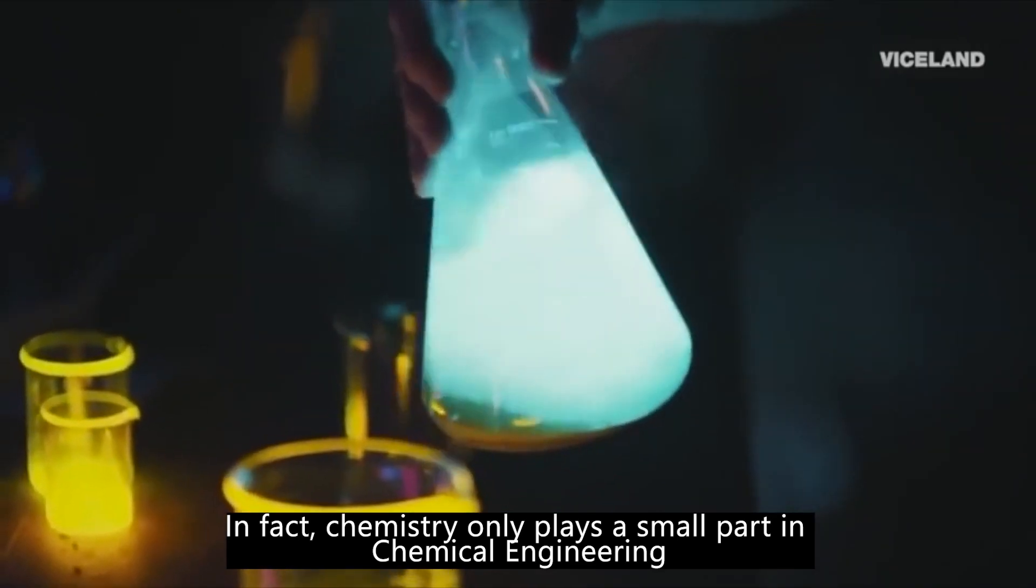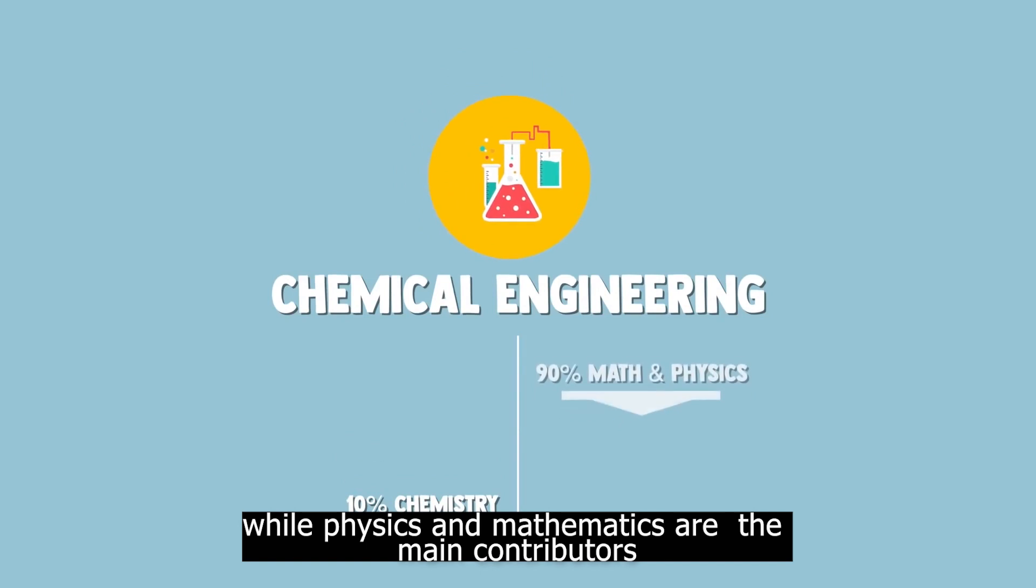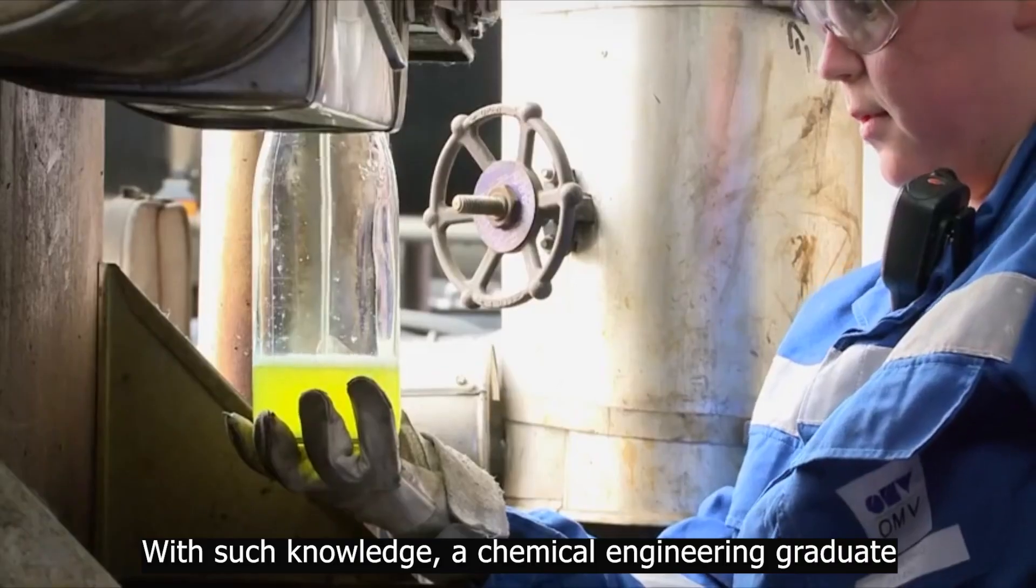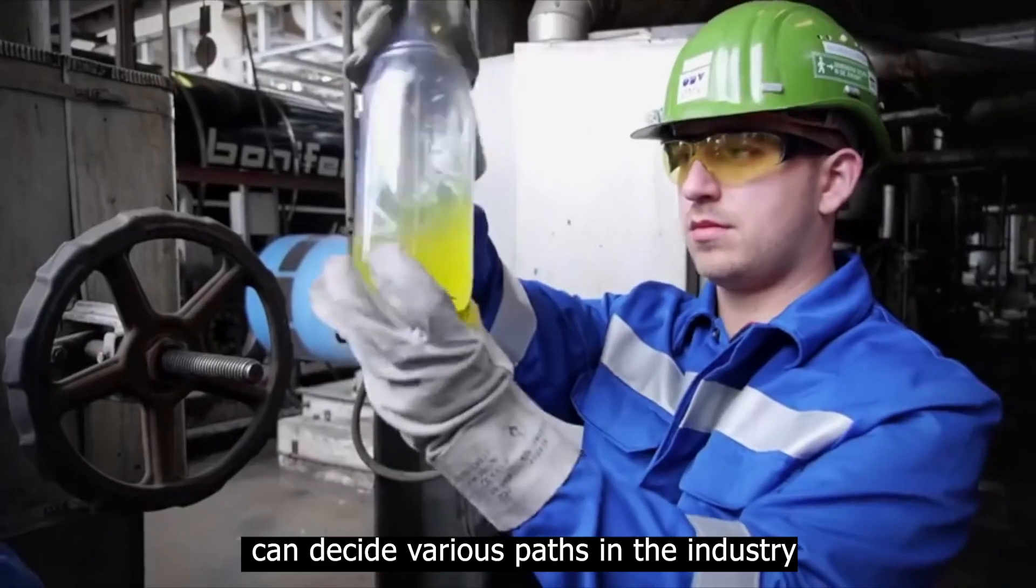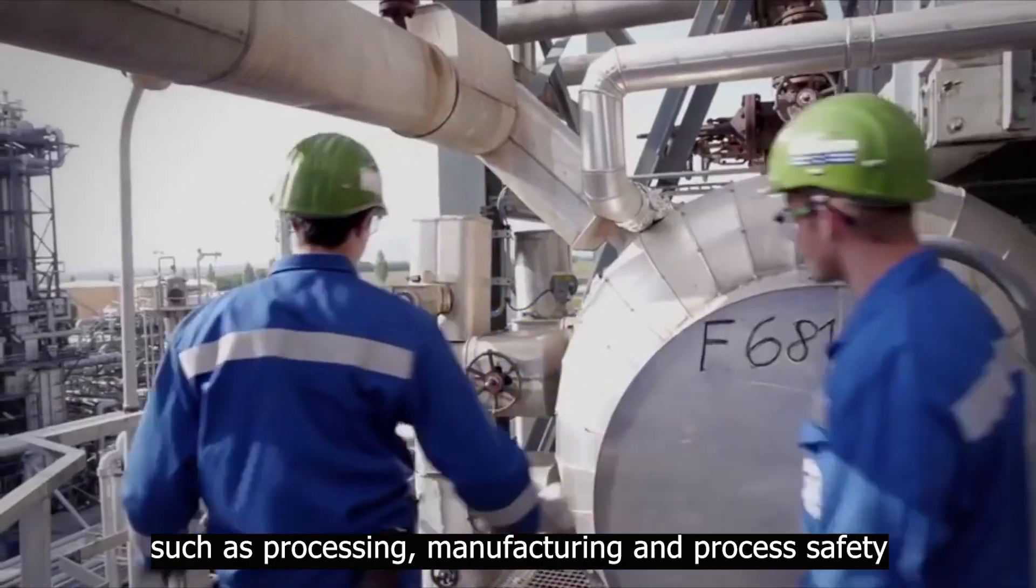In fact, chemistry only plays a small part in chemical engineering while physics and mathematics are the main contributors. With such knowledge, a chemical engineering graduate can decide various paths in the industry such as processing, manufacturing and process safety.